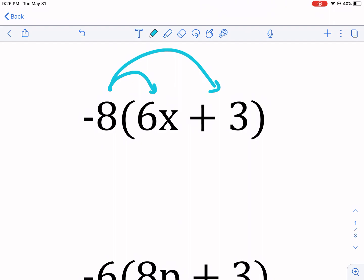Negative 8 times positive 6x, that gives us negative 48x. And then we have negative 8 times a positive 3, that gives us a negative 24. Notice how I copied this down first.